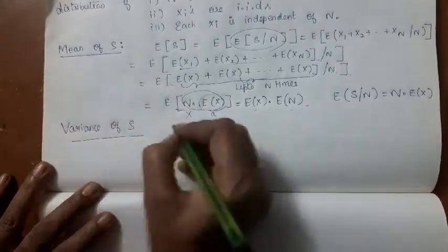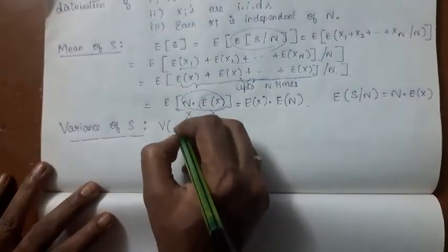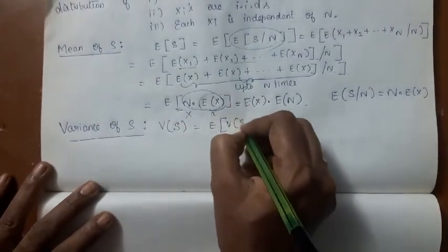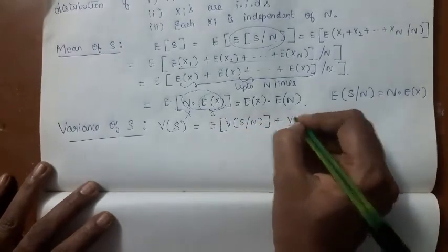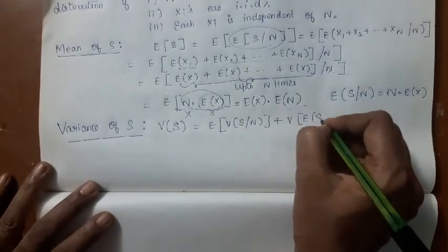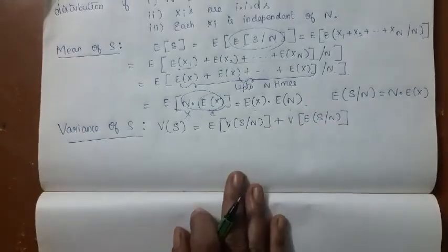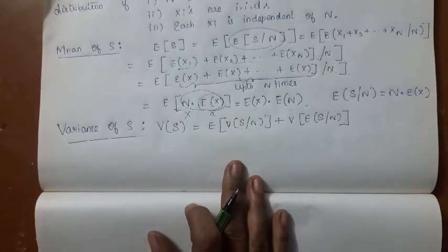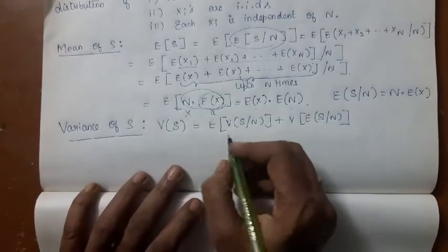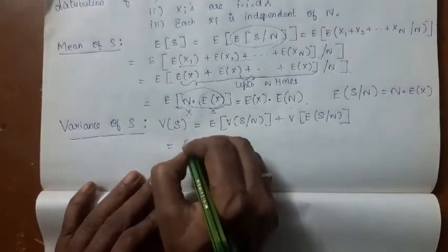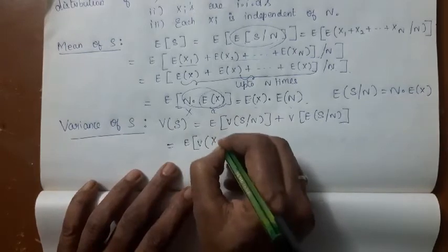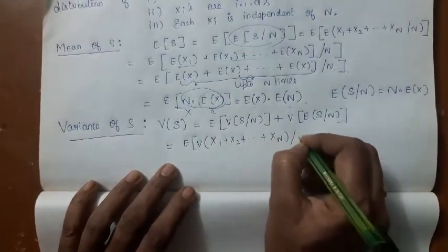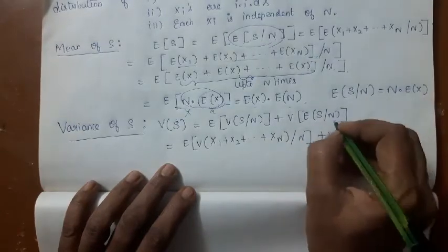Now let us derive the variance of S. Var[S] can be written as E[Var(S|N)] + Var(E[S|N]) — the proof for which you should have studied under marginal and conditional distributions. Now this equals expectation of Var(X1 + X2 + ... + XN | N) plus Var(E[S|N]).